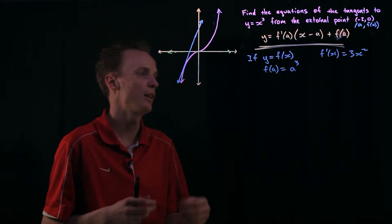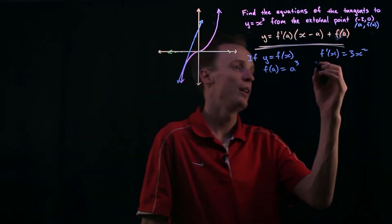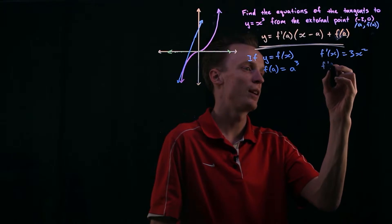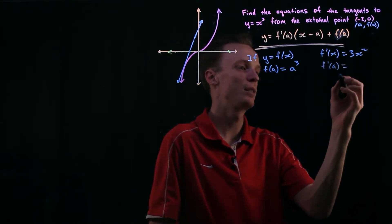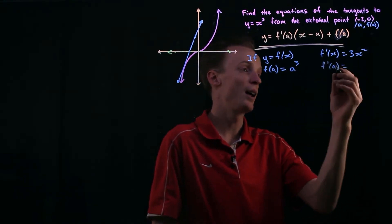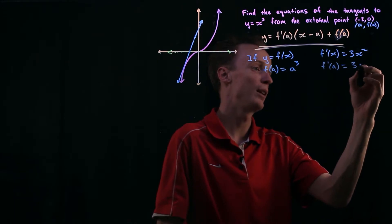And from here I can find what the derivative is going to be at this point. So it's going to be the f dash of a is going to be substituting a into this so it'll be 3a squared.